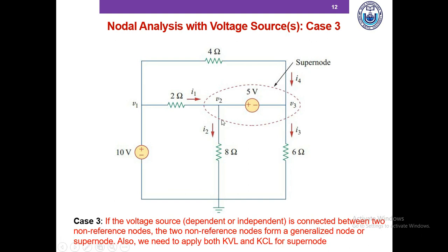Now let's look at case three. If the voltage source — whether dependent or independent — is connected between two non-reference nodes, neither terminal is the reference node. In this case, the two non-reference nodes form a generalized node also known as a super node. To solve the circuit with a super node, we need to apply both KCL and KVL.